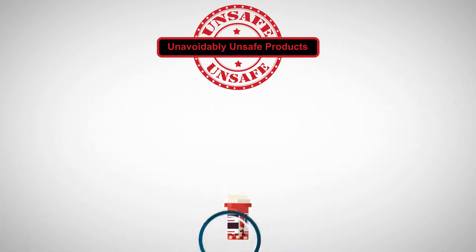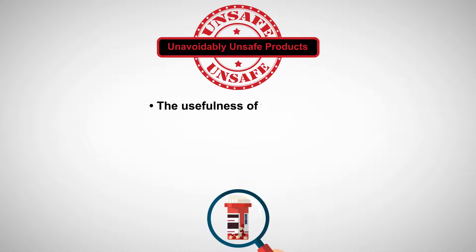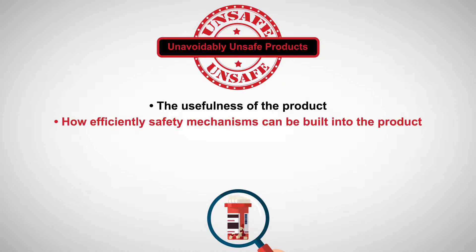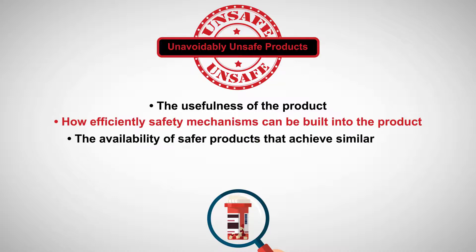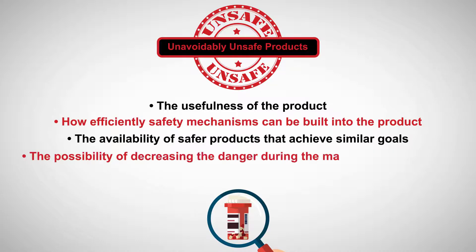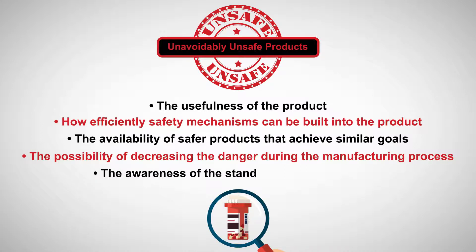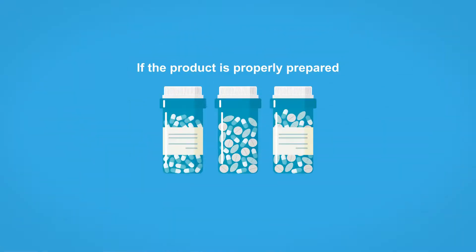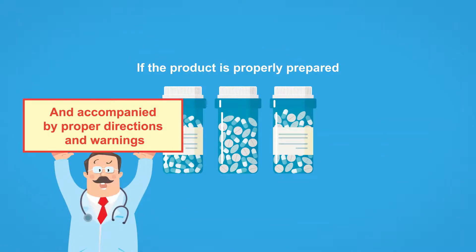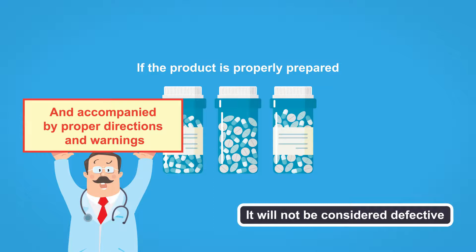Factors relevant to this decision include the usefulness of the product, how efficiently safety mechanisms can be built into the product, the availability of safer products that achieve similar goals, the possibility of decreasing the danger during the manufacturing process, and the awareness of the standard user of the danger. If the product is properly prepared and accompanied by proper directions and warnings, it will not be considered defective.